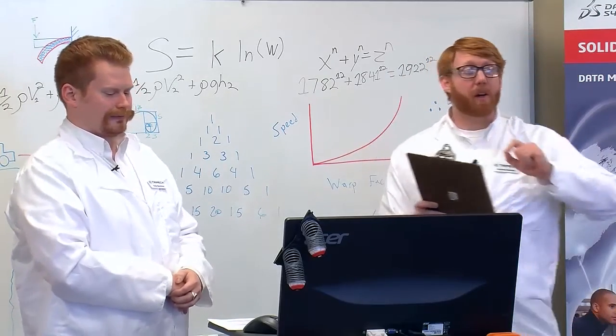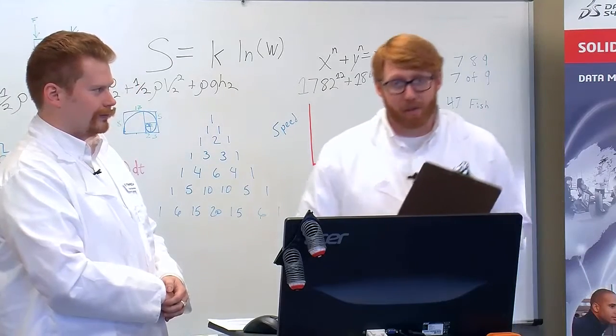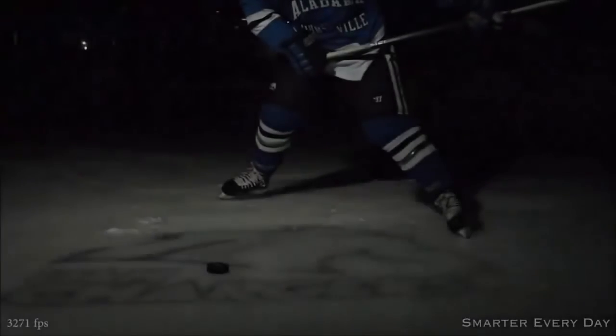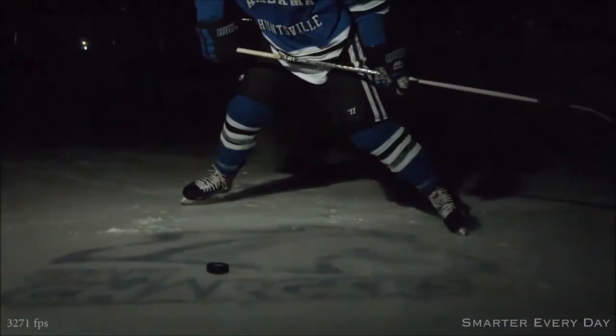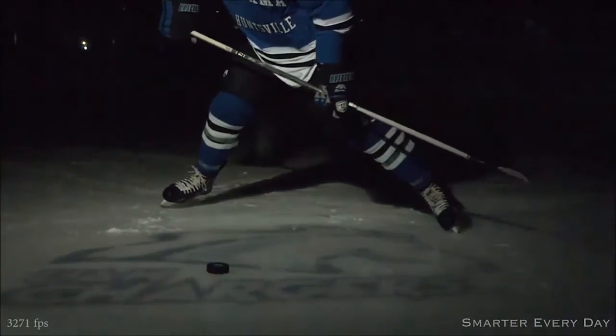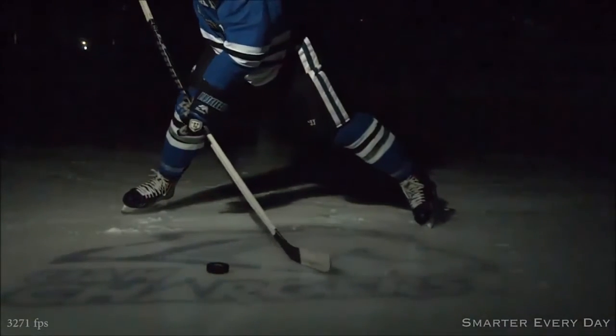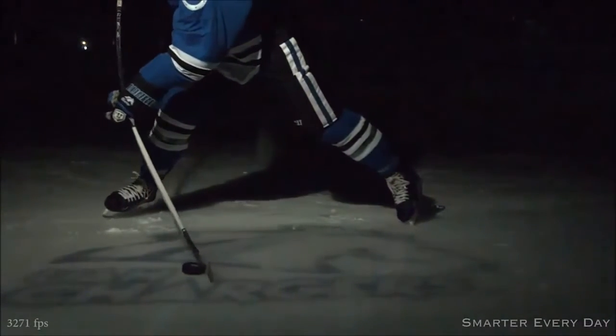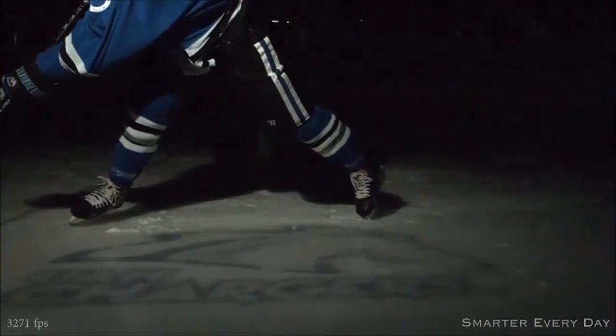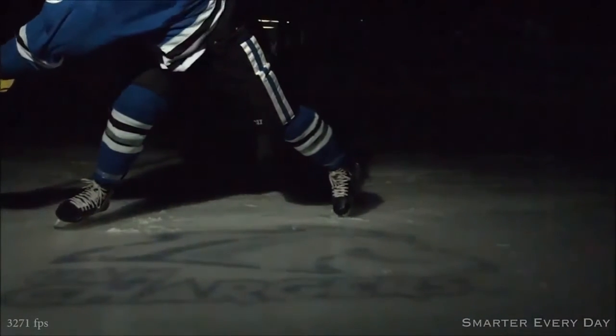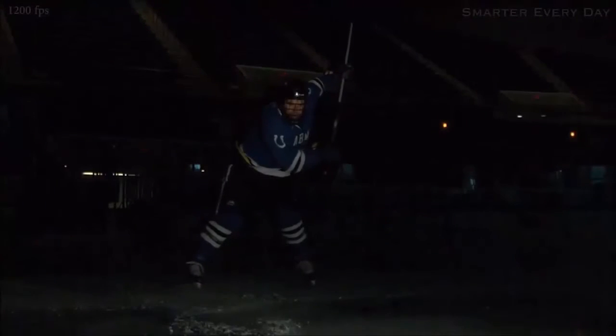So once again, we depend upon Destin's video from Smarter Every Day because we are lazy and shiftless. The player stores potential energy in the stick by striking the ice before he hits the puck. Now, this seems like it would waste energy and slow down his shot, but it actually does the opposite. By gradually releasing that potential energy stored up in the stick like a slingshot, the player can make the puck go even faster than he can swing the stick. Look at the overflex here as the stick outruns the player's hands.